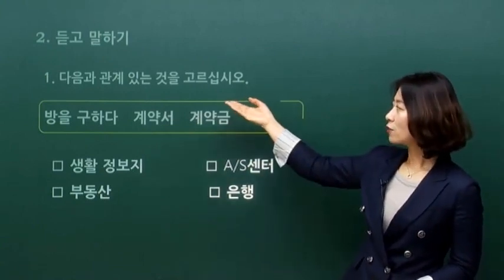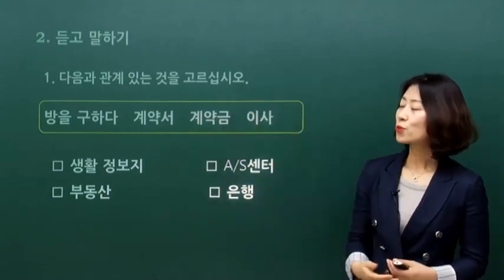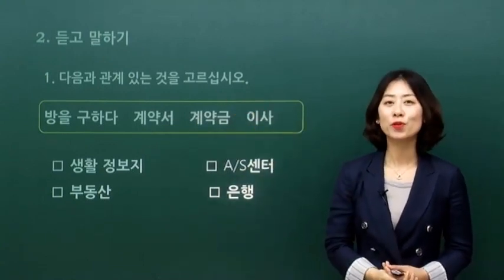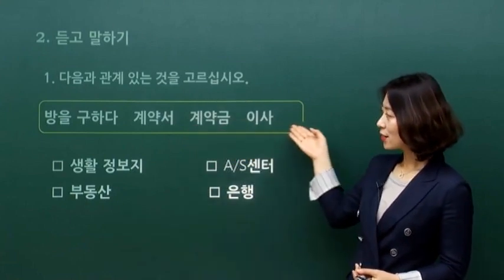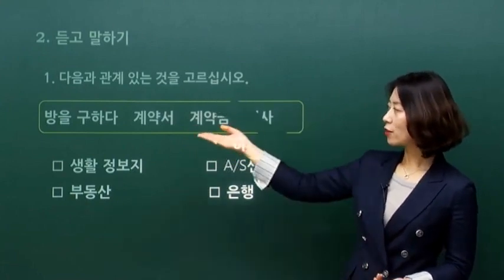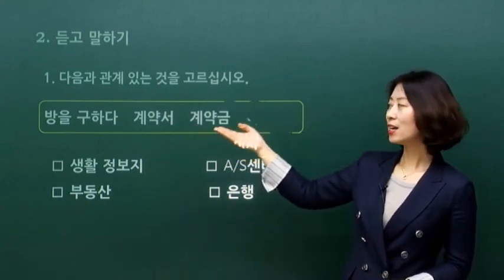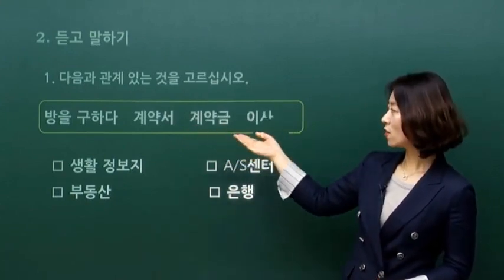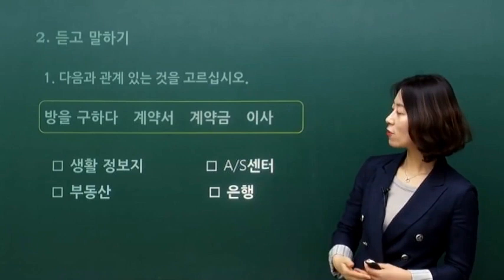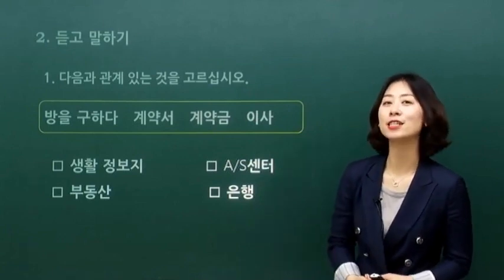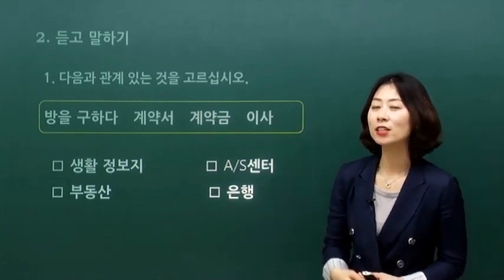첫 번째, 1번, 다음과 관계 있는 것을 고르십시오라는 문제가 있네요. 박스 안을 좀 볼까요? 방을 구하다, 계약서, 계약금, 이사 — 이 단어들과 관계 있는 것들을 찾아보는 거네요.